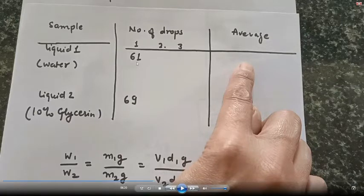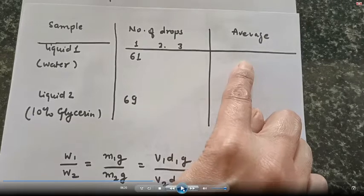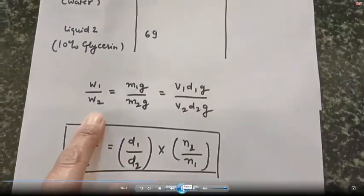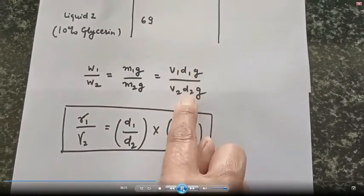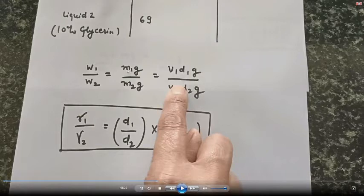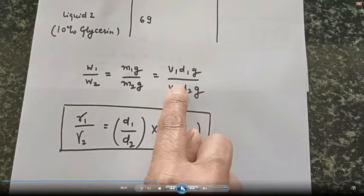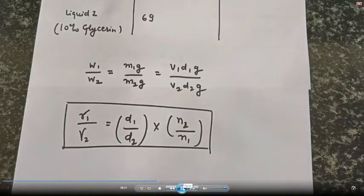For liquid one and liquid two, we repeat the experiment three times and take the average. Now, weight W = mg = mass × gravity, and mass = volume × density (m = V × d). So for W₁ it is V₁d₁g, and for W₂ it is V₂d₂g, where g is gravity, V is volume, and d is density.